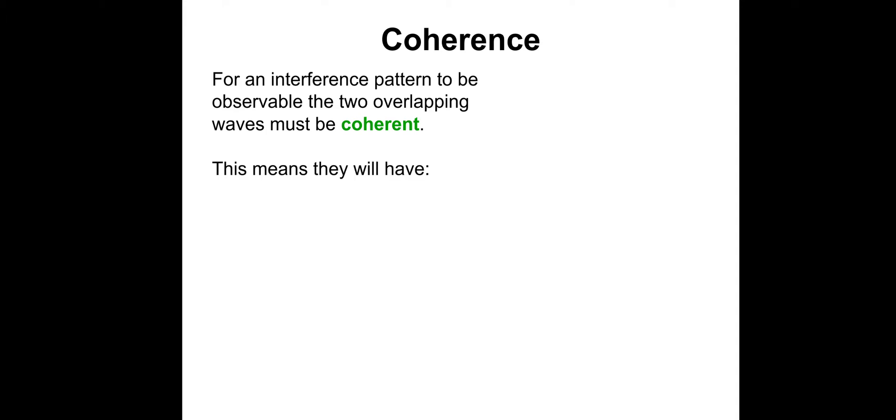Coherence. This is important. For an interference pattern to be observable, the two overlapping waves must be coherent. So it means they will have the same frequency and a constant phase difference, which essentially means that the waves must be doing the same thing at the same time, whilst occupying the same space.